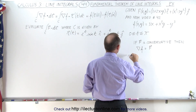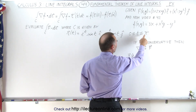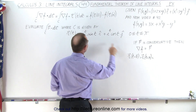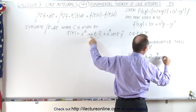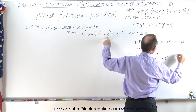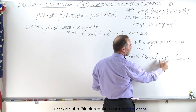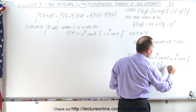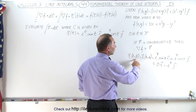The vector r evaluated at t = b, which is t = π, gives us r(π). Plugging π into our function, we get e^π times sine(π) in the i direction, plus e^π times cosine(π) in the j direction. Since sine(π) = 0, the i component is zero. Since cosine(π) = −1, the j component becomes −e^π. So the endpoint position vector is 0i − e^π j.